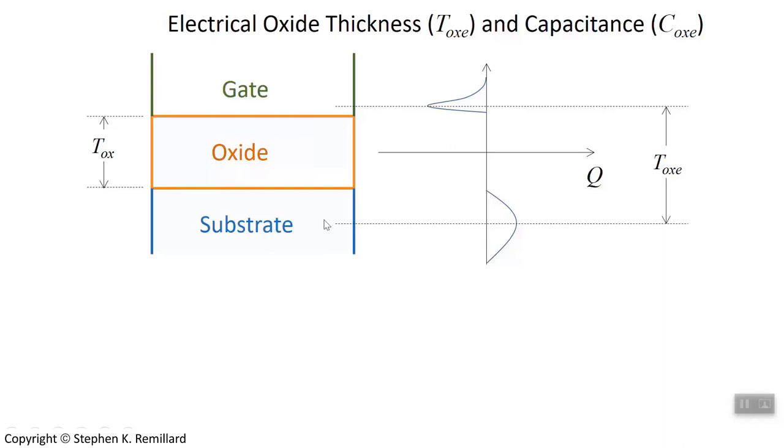Consequently, as far as electricity is concerned, the thickness of the oxide is more. And so T sub OXE accounts for these added lengths.